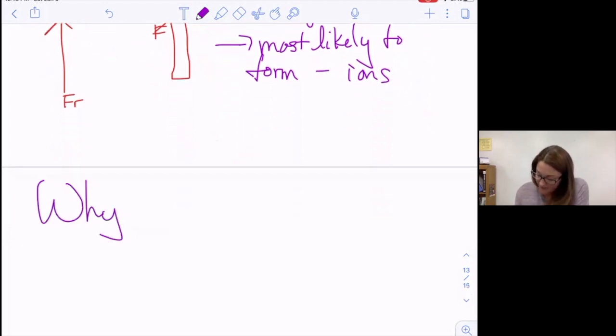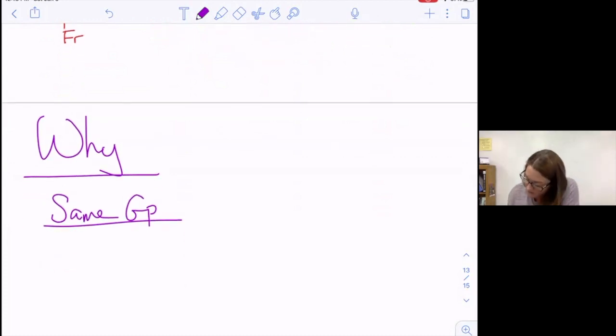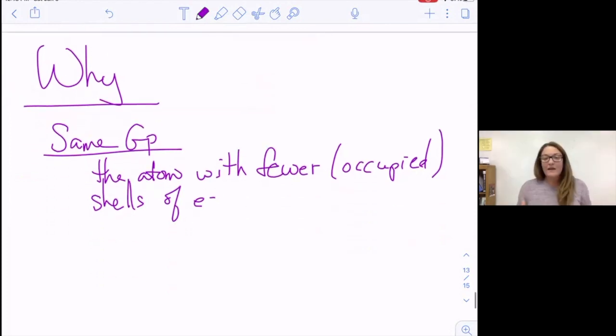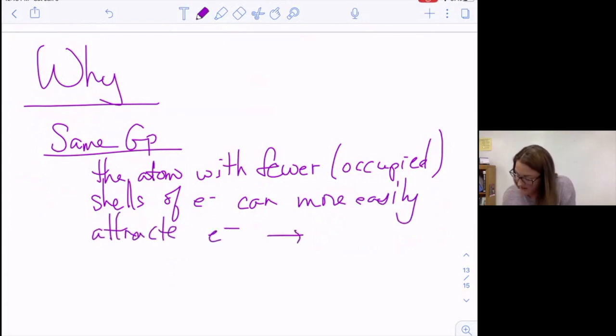If we are asked why, you're going to notice a pattern here in explanations. If they're in the same group, the vertical trend, the atom with fewer shells—if this atom is smaller, it can get closer to another atom and therefore pull harder on electrons and steal an electron from somewhere else. So the atom with fewer shells can more easily attract electrons, giving it a higher electron affinity. It has to do with the fact that it's smaller.